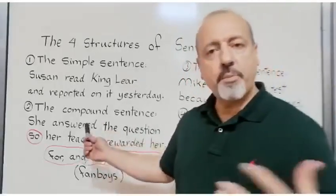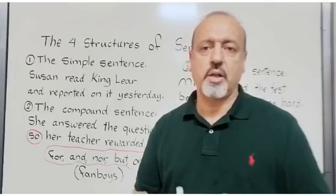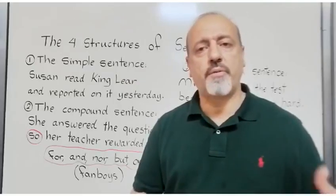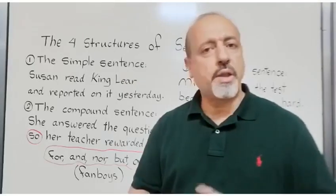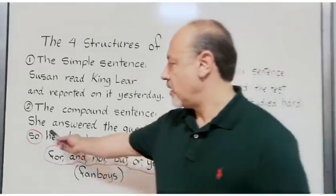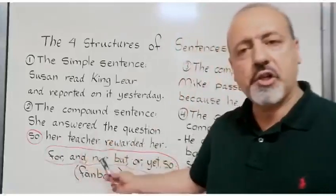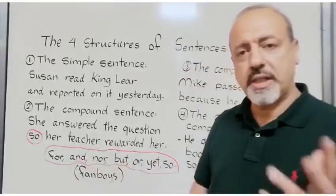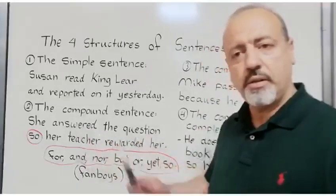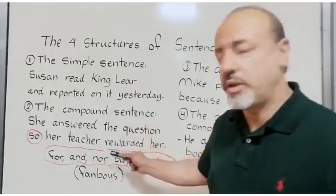Number two is the compound sentence. The compound sentence, in fact, is a combination of two simple sentences. Or we can say that the compound sentence consists of two independent clauses with no subordinate clause. An example: 'She answered the question, so her teacher rewarded her.' We notice that in this compound sentence we have two simple sentences combined by the coordinating conjunction 'so'.